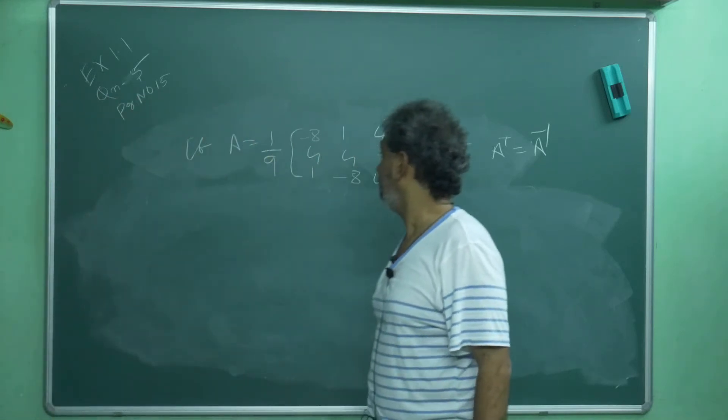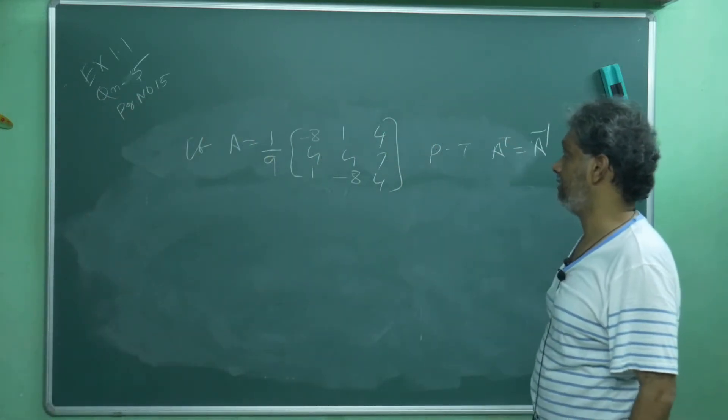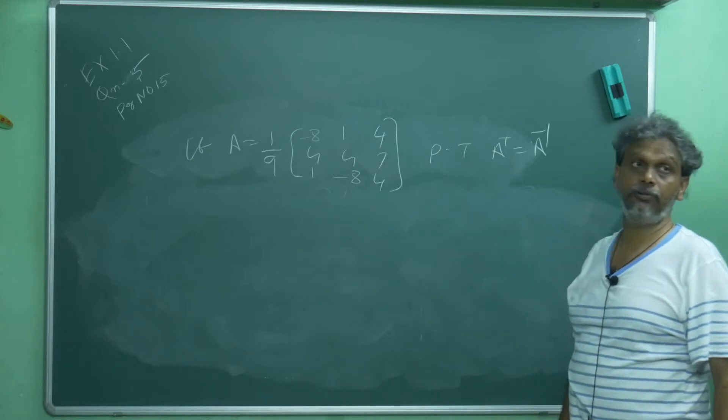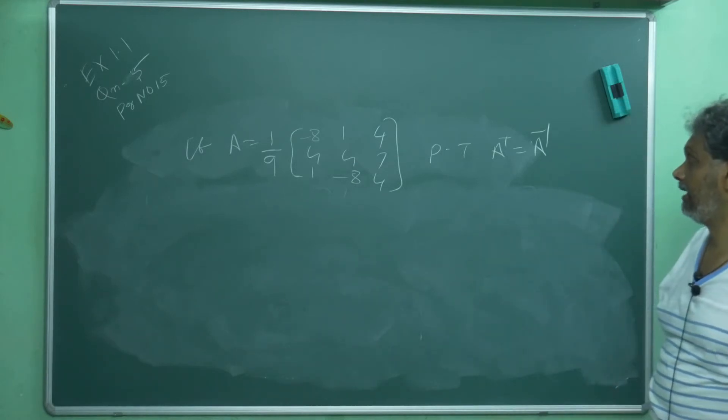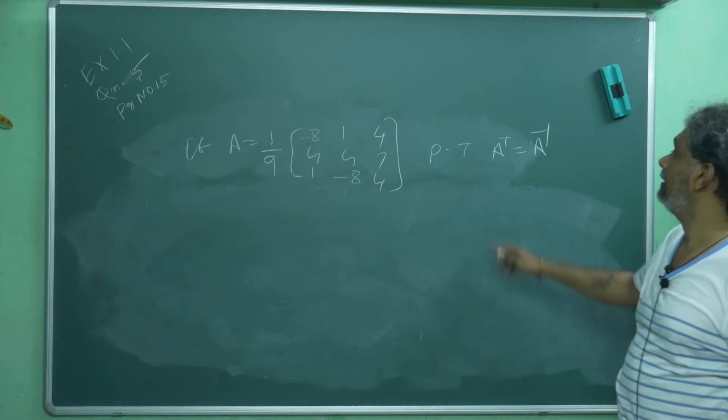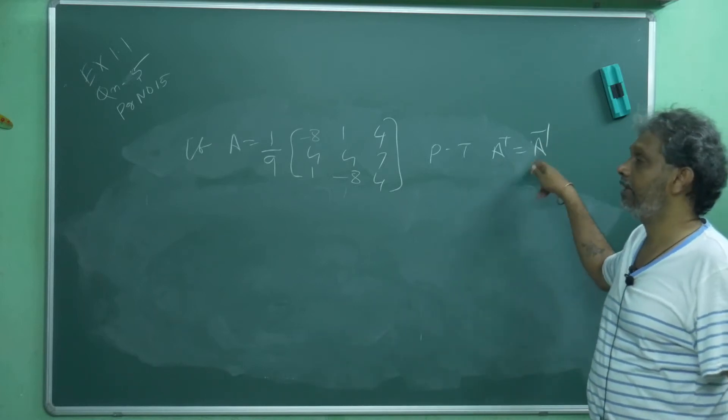This is also a good problem. If A is equal to 1 by 9, first row is minus 8, 1, 4, second row is 4, 4, 7, third row is 1, minus 8, 4. Prove that A transpose is equal to A inverse.